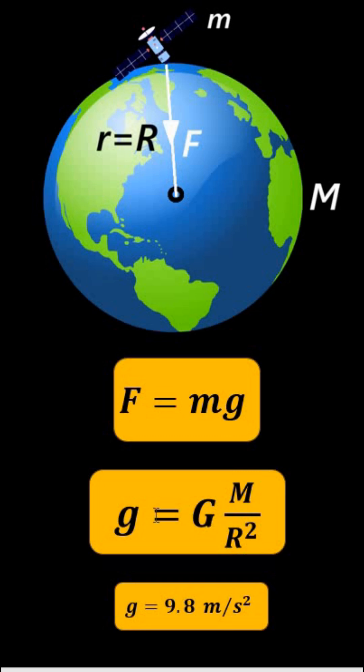So, for the sake of simplicity, I am assuming that the object is near the surface of the Earth and has a value 9.8 meter per second square.